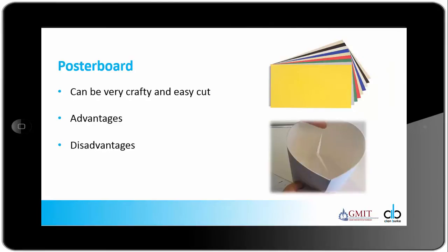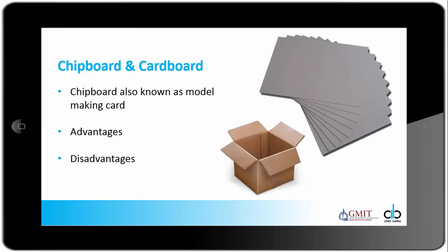Posterboard — it can be very crafty and very easy to cut. It's very useful for models that might have a curved or bent section in them. It comes in a range of colours which is also very handy, and is quite cheap.